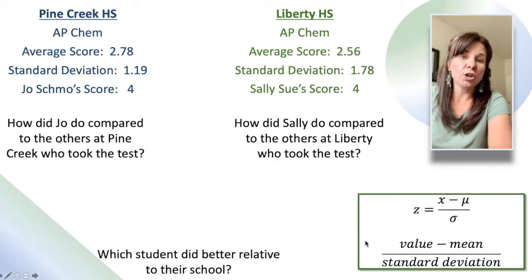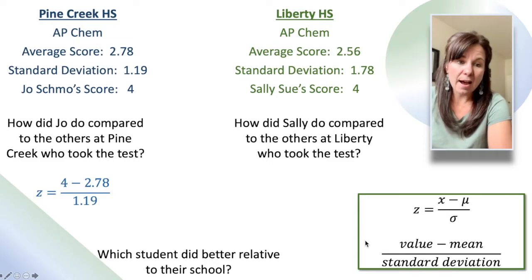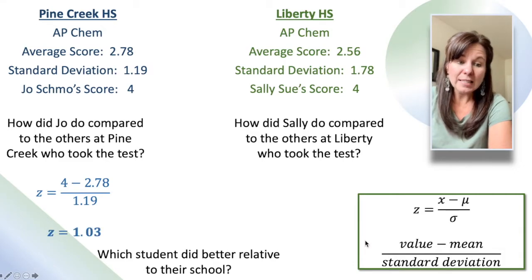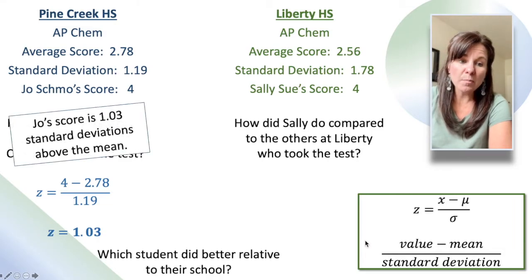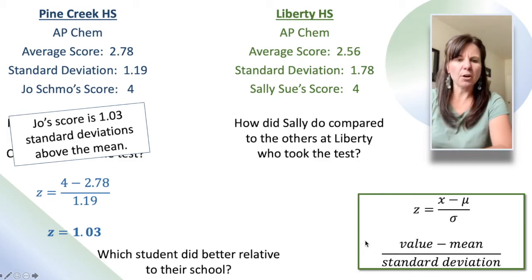So let's check out Joe first and see what his z-score is. We're going to take Joe's score of 4, subtract the average at Pine Creek, 2.78, divided by the standard deviation of 1.19, and we get that Joe's z-score is 1.03, which means that he's 1.03 standard deviations above the mean. Good job, Joe.